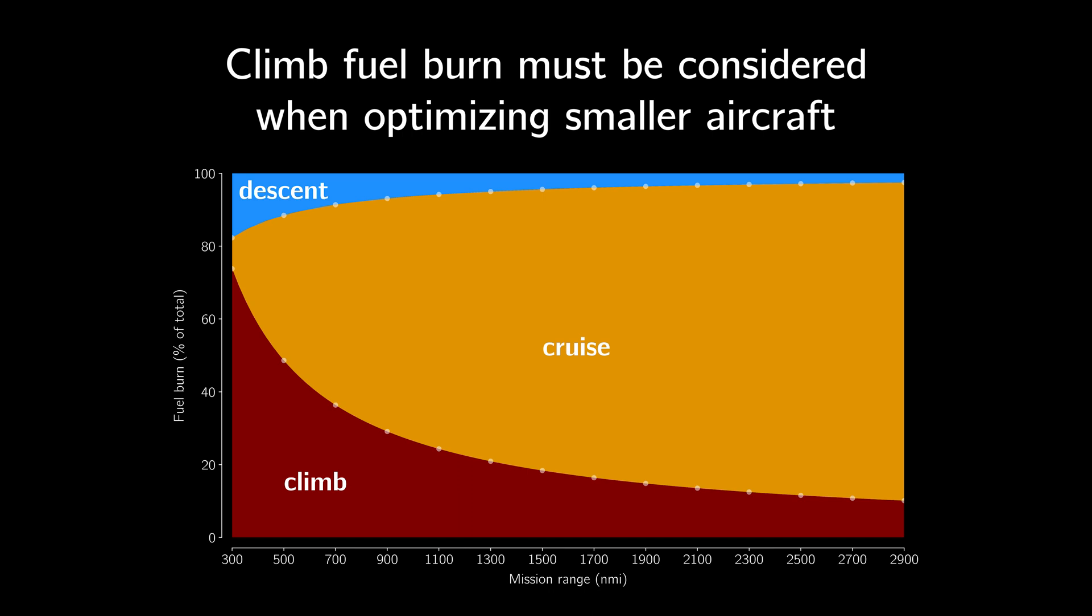For a 737-sized aircraft, the fuel burn in climb makes up a substantial portion of the mission fuel burn for shorter flights. Since low speed and climb performance are not considered in traditional aerostructural optimization, we need a new way of computing fuel burn for aerostructural optimization on these short missions.